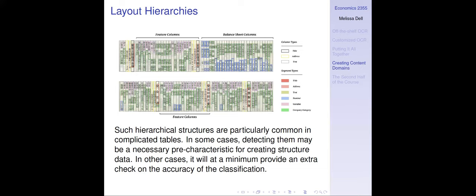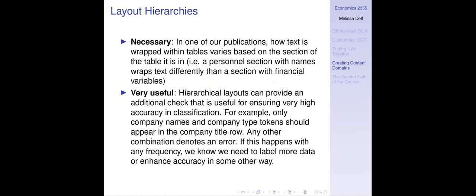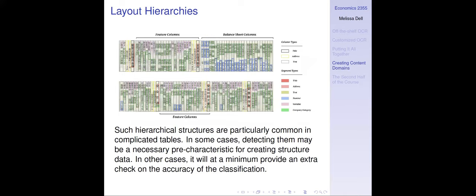As I mentioned, this document has a hierarchical structure where we classify columns and then classify individual elements. There are two reasons this is useful: first, it may be necessary — in one publication, how you wrap text when it spans multiple cells of a table differed by the section of the table. Second, it's very useful because having two separate layout predictions lets you check — for example, title and company title tokens are the only ones that should appear in a title row. If anything else is there, something has gone wrong. This ex post signal tells you whether your model is working or whether you need to go label more data.